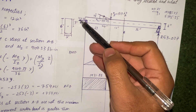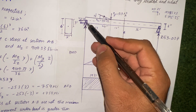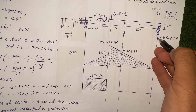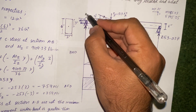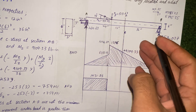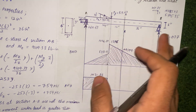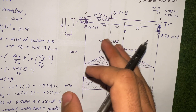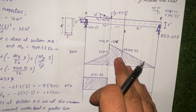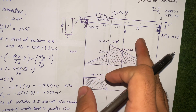Take the moment at A equal to zero to get the reaction at B, and take summation of vertical forces equal to zero to get the reaction at A. I have written the exact values without rounding off, in order to get the bending moment equal just to the left and just to the right of the section.